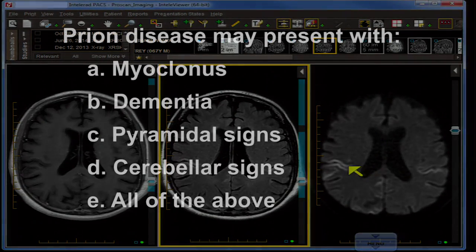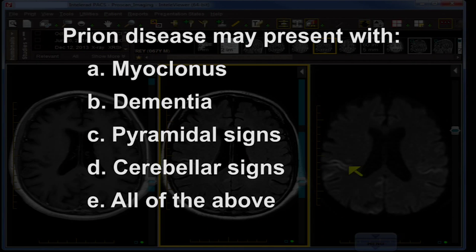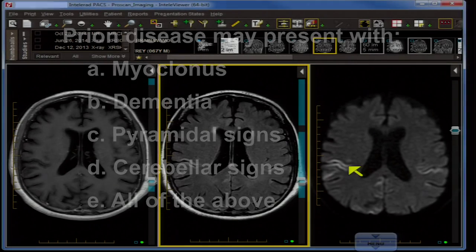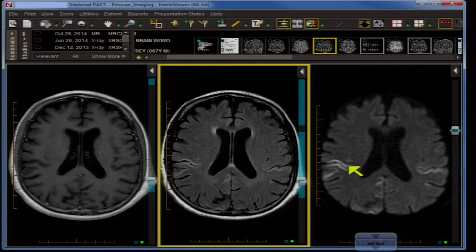Question four: Prion-mediated disease may present with A. Myoclonus, B. Dementia, C. Pyramidal signs, D. Cerebellar signs, E. All of the above. The answer is E — all of the above.